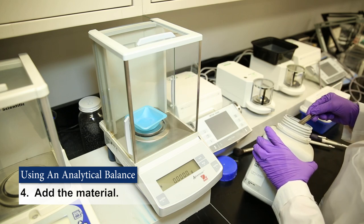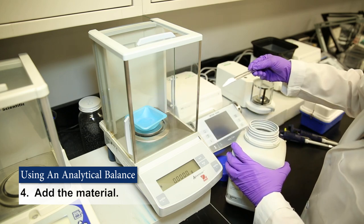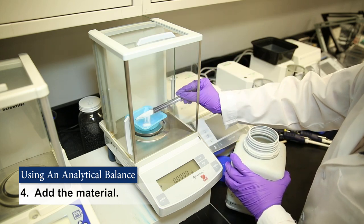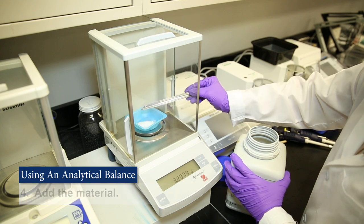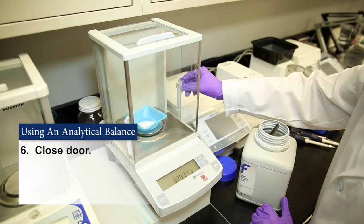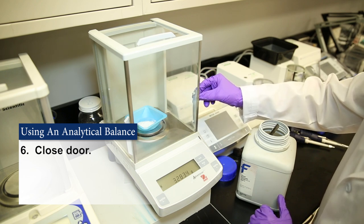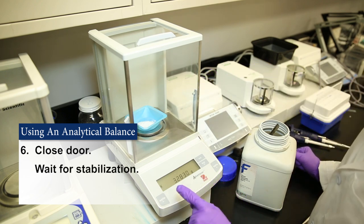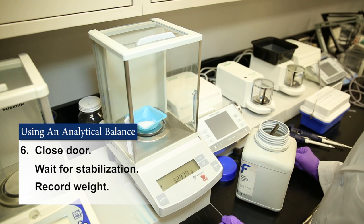You'll then add the material to be weighed. You'll want to close the glass doors again and wait for the reading to stabilize. That's indicated by an asterisk. And you can record that weight.